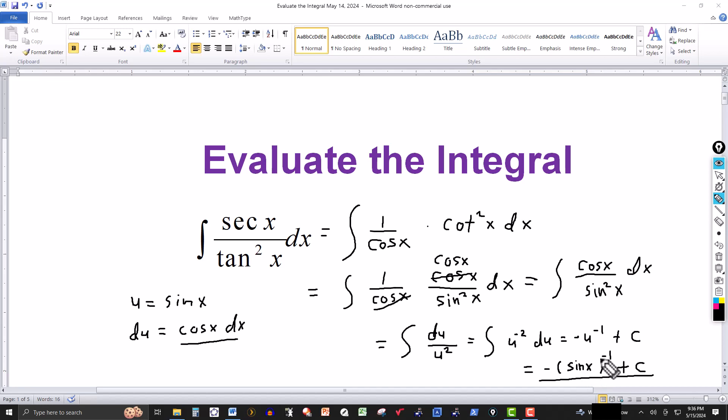Or sine of x to the negative 1 is the same thing as 1 over sine. 1 over sine of x is the same thing as cosecant. So I could rewrite this as negative cosecant of x plus constant of integration.